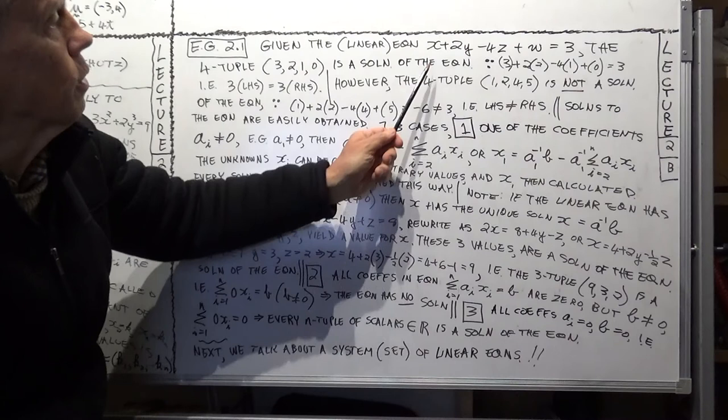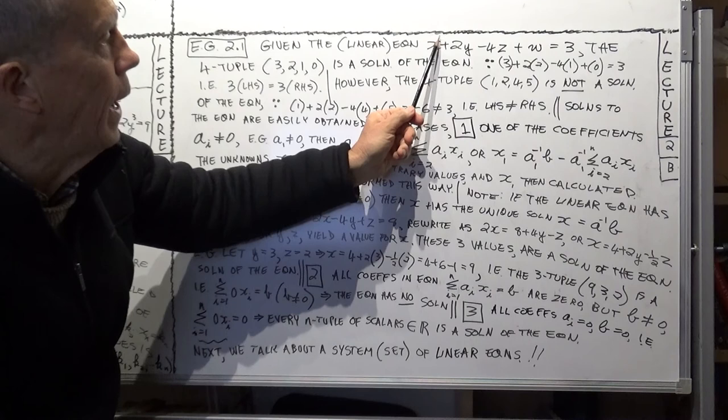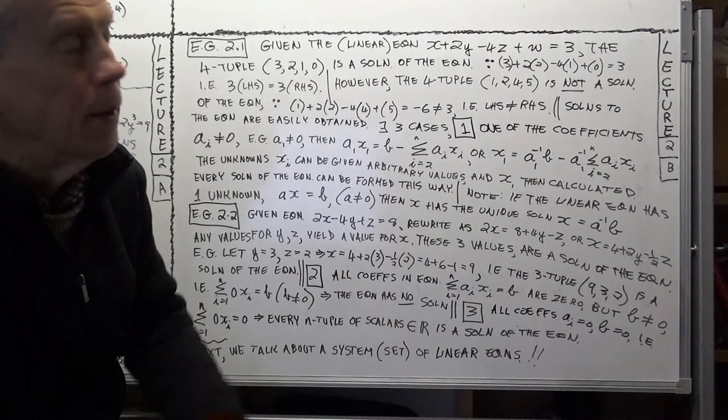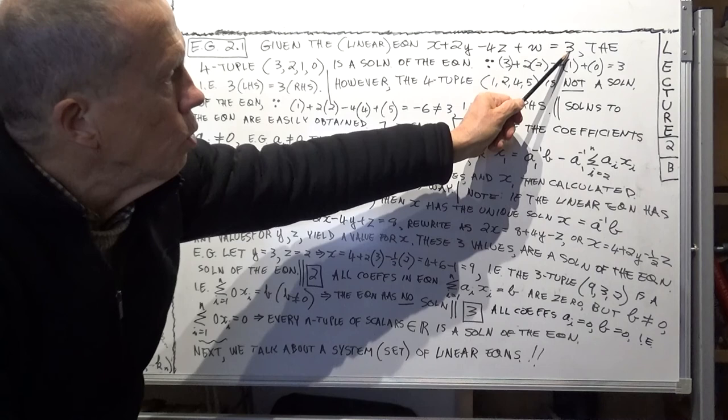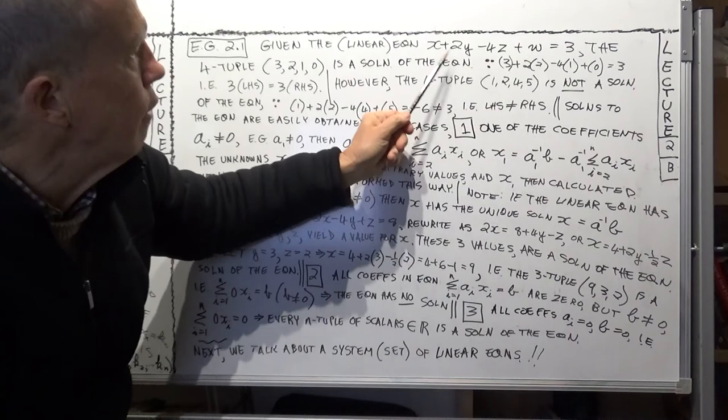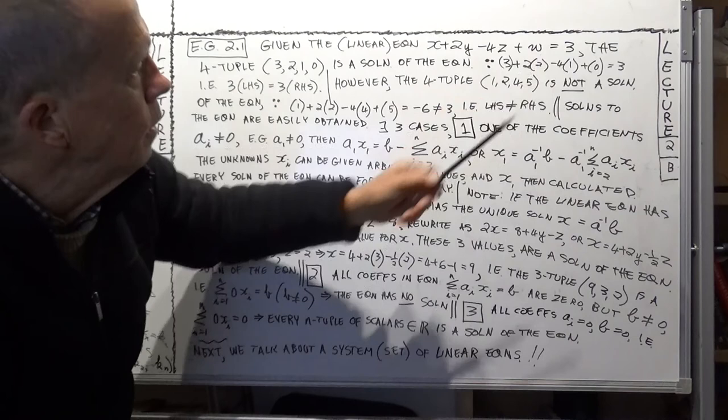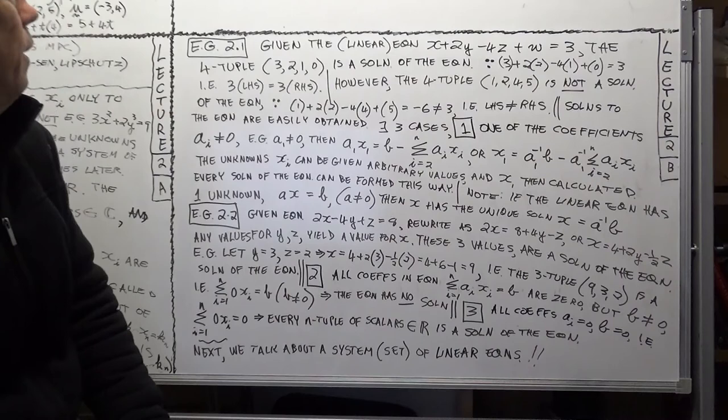In the previous session, we introduced the concept of a linear equation. Linear means simply that the power of the unknowns are all one — that's the definition of a linear equation. On the right-hand side, you have the so-called constant of the equation. Here's a concrete example with four unknowns or variables: X, Y, Z, W, or alternatively X1, X2, X3, X4.